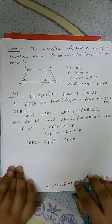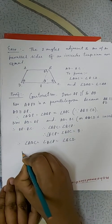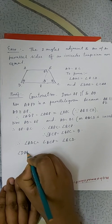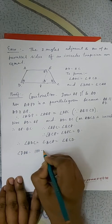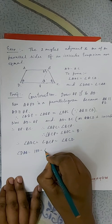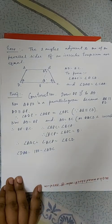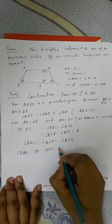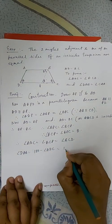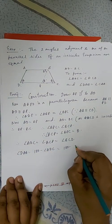And angle BAB is 180 minus angle ADC. Angle ADC is BCD, so 180 minus BCD.